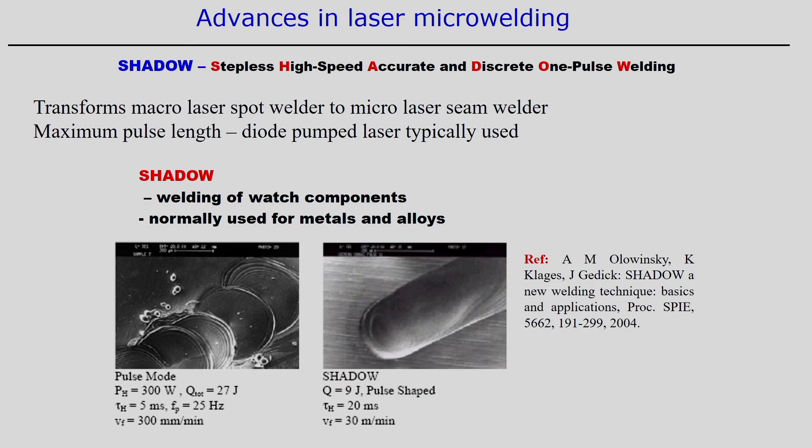The SHADOW technique stands for Stepless High-Speed Accurate and Discrete One-pulse Welding. It simply converts conventional macro spot welding to a linear micro welding process by utilizing the optimum length of the pulse duration.